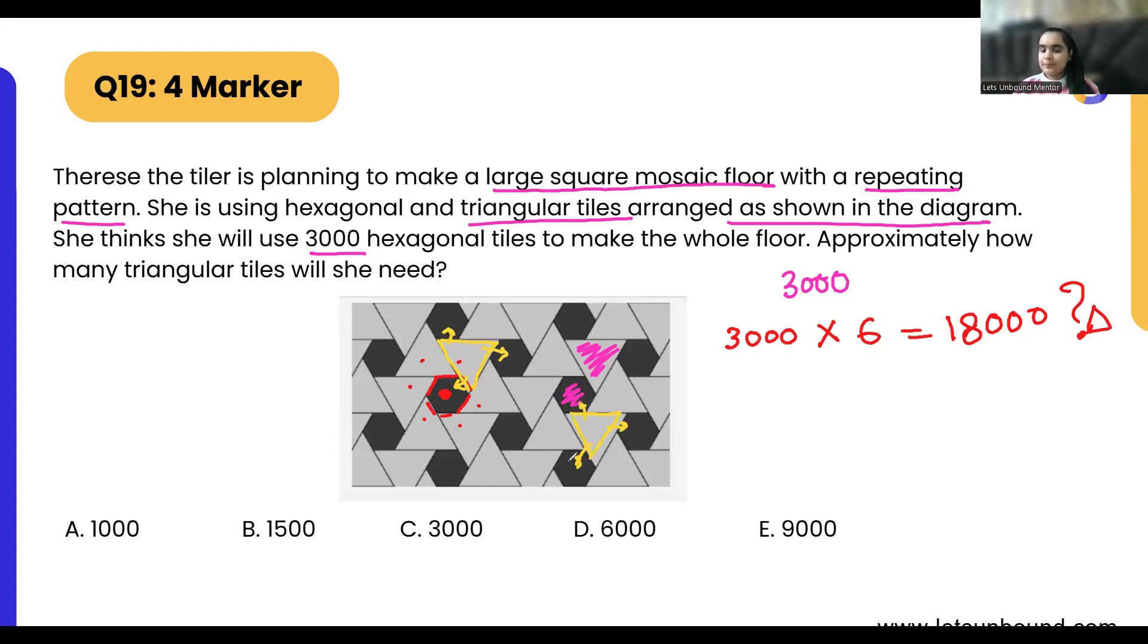So that means whatever answer we got, we need to divide it by three because we are counting extra. Right now, if we divide it by three, the answer will be three times one is three, three times six is eighteen, and three zeros will go as is. Answer is 6000. So approximately 6000 triangular tiles she will need along with 3000 hexagonal tiles. Easy!